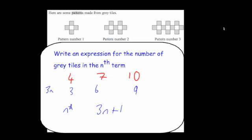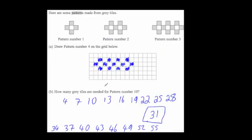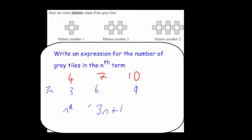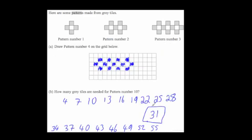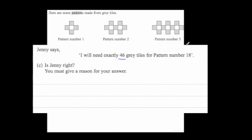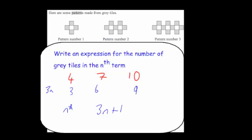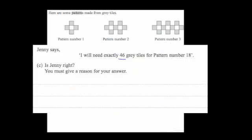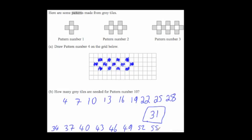Let's check our answers. For pattern number 10: 3 times 10 is 30, plus 1 is 31 — and that matches. For pattern number 18: 3 times 18 is 54, plus 1 is 55 — and that was also the answer we had for pattern number 18.